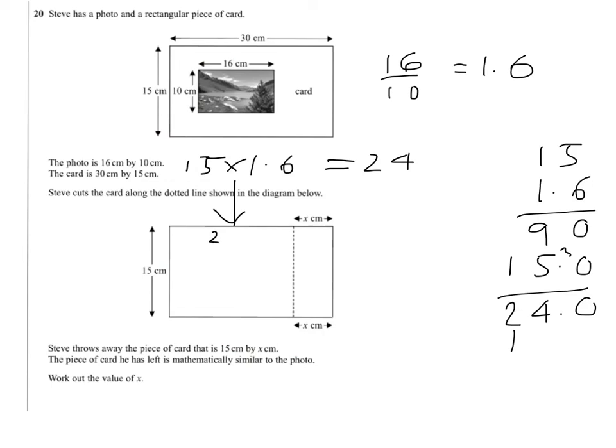So width needs to be 24, which means we're going to need to cut 6 off the card to get the shapes mathematically similar. That's the card and the photograph. So the amount that we cut off is 6 centimeters. And there's your answer.